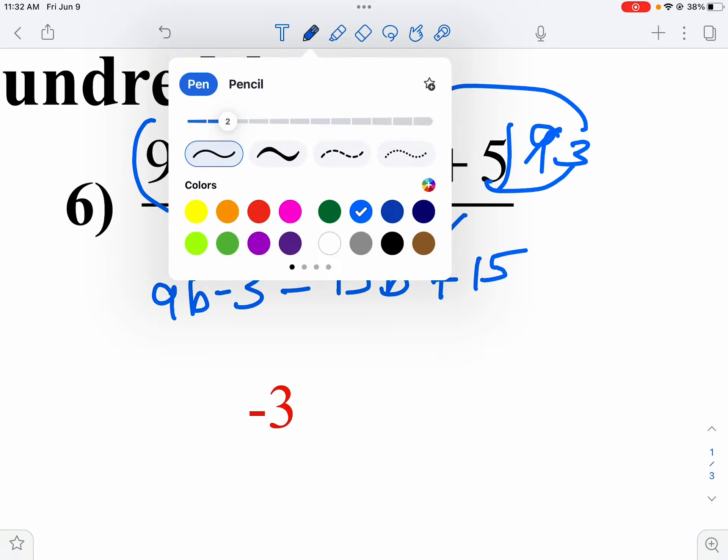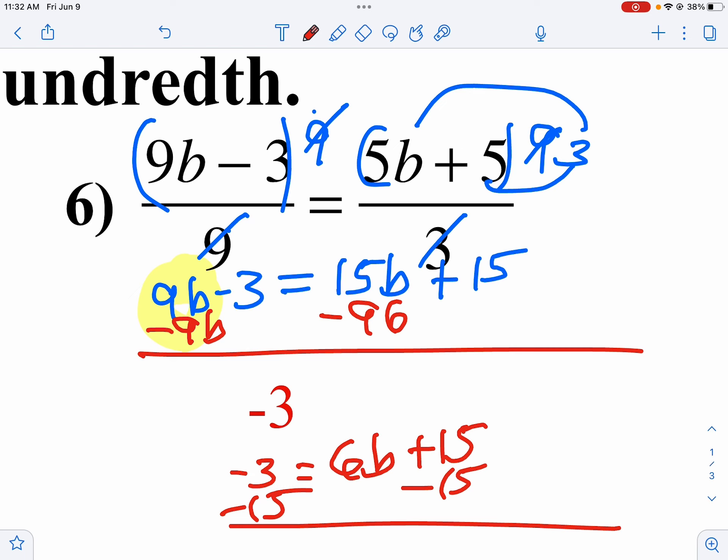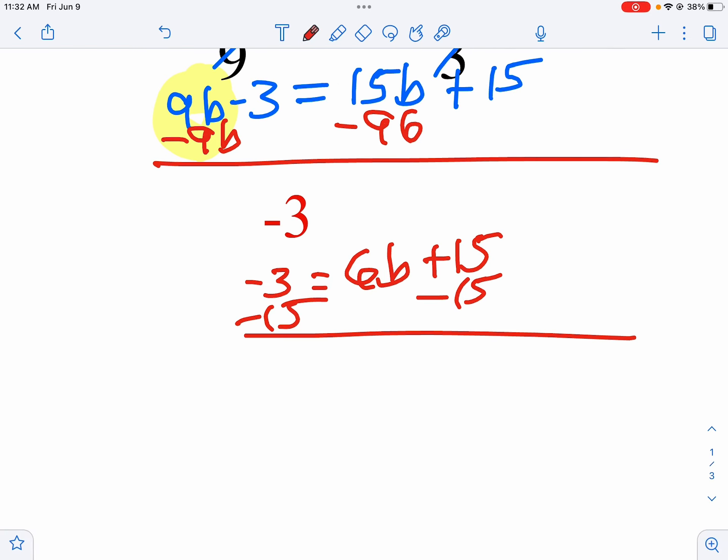I always like to move my smaller B now. So I'm going to subtract 9B from both sides. And notice, the 9B is reduced, so I get negative 3 on the left. 15 minus 9 is 6B plus 15. Well then I'm going to subtract 15 from both sides. And we get negative 18 equals 6B. Divide by 6. Negative 3 equals B. There's your answer.